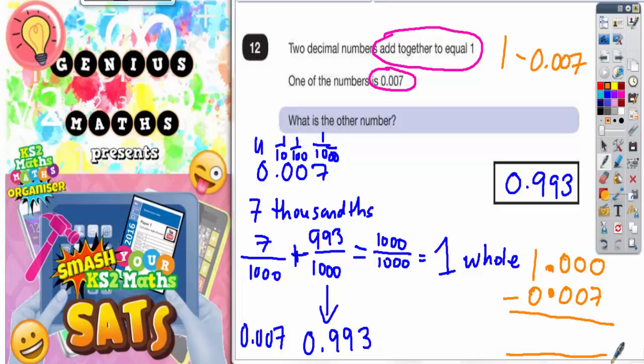Zero take away seven, you can't do, so you would have to borrow one. You can't borrow from this zero, you can't borrow from this zero, so you've got to borrow from the one. Cross out the one, that becomes zero, and the one you borrowed turns the first zero into ten. That's no good because we still can't do zero take away seven.